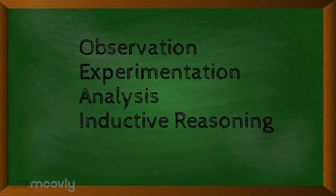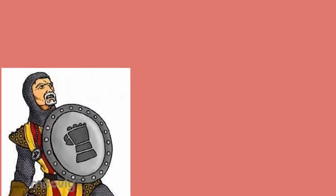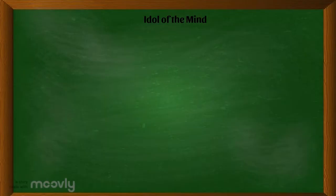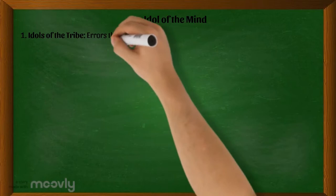He truly believed that we have to guard against what he called the Idol of the Mind, or the categories of false knowledge which slow us down and cloud judgment. First, Idols of the Tribe: errors that are caused by limiting the human senses, which he sees as our assets in nature, and the tendency of human nature to overemphasize the reality of nature than what it actually is.